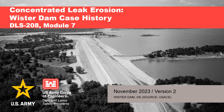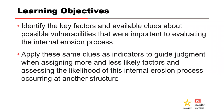This presentation is the Worcester Dam case history where concentrated leak erosion resulted in a dam safety incident. The objective is to identify the key factors and clues about possible vulnerabilities important to evaluating concentrated leak erosion. You can then apply these same clues as indicators to guide judgment when assigning more and less likely factors and assessing the likelihood of concentrated leak erosion at other structures.